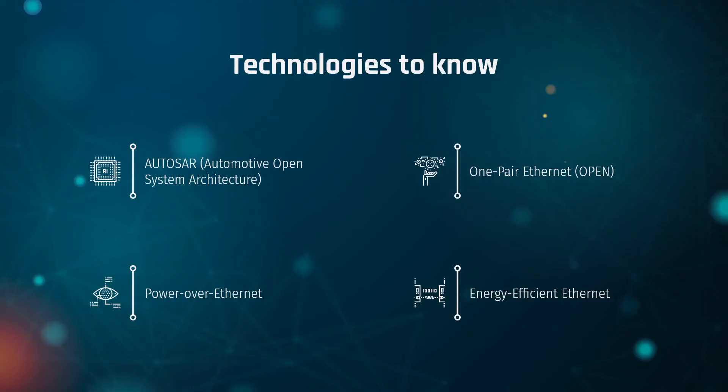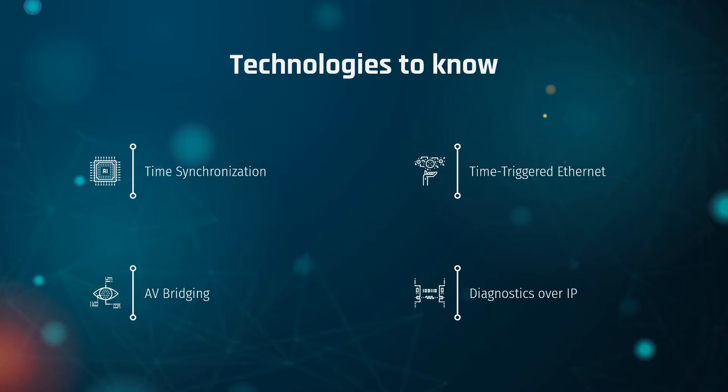Digging deeper into these technologies: Autosar, the Automotive Open System Architecture; One-Pair Ethernet, otherwise known as OPEN; Power Over Ethernet, or PoE; Energy Efficient Ethernet, EEE; Time Synchronization — which we talked about being a problem before; AV Bridging; Diagnostics Over IP, which is extremely exciting; and Time Triggered Ethernet.